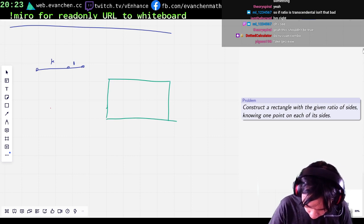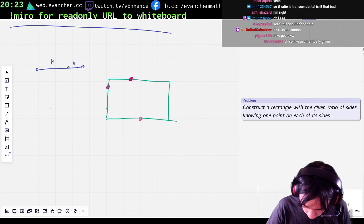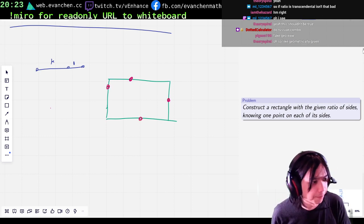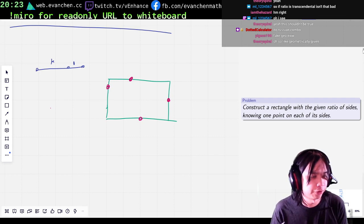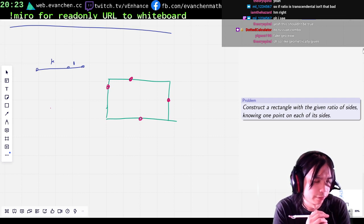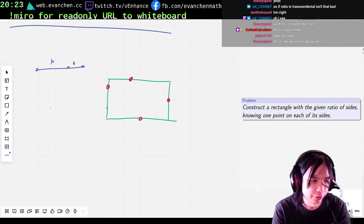And you want to construct a rectangle with aspect ratio 1 to k, given one point on each of its four sides. So like point, point, point, point, or something like that. I assume the ratio is geometrically given because if it's not, then you can take any non-constructible ratio and it's not possible.